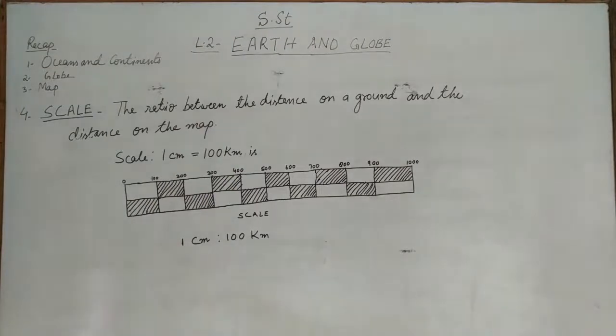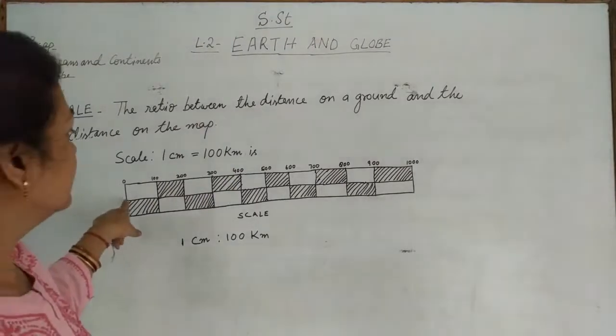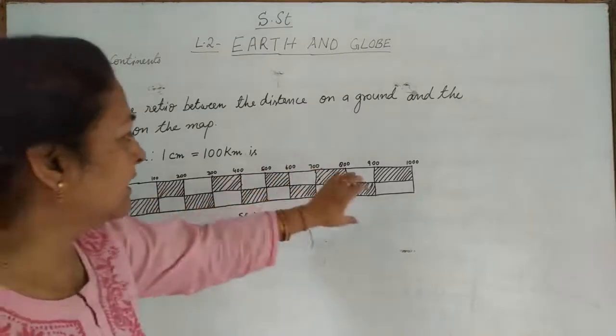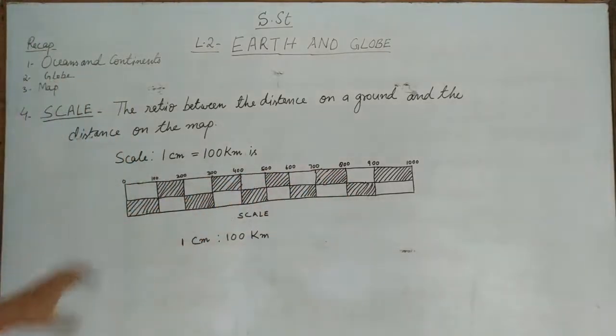In this way we show it. Such a bar will always be shown to you. Whenever you see a map, you will see such a scale somewhere in the map. The scale is generally shown in the center of map.